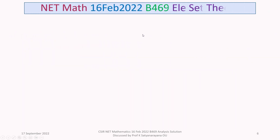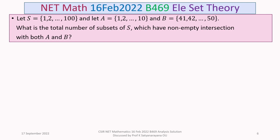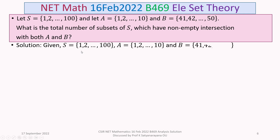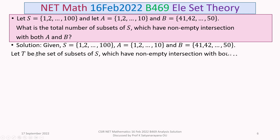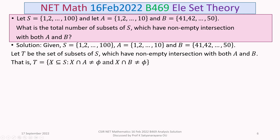Let us now discuss the solution in detail. We have S = {1, ..., 100}, A = {1, ..., 10}, B = {41, ..., 50}. Let T be the set of all subsets of S which have non-empty intersection with both A and B. Therefore, T = {X ⊆ S : X ∩ A ≠ ∅ and X ∩ B ≠ ∅}.